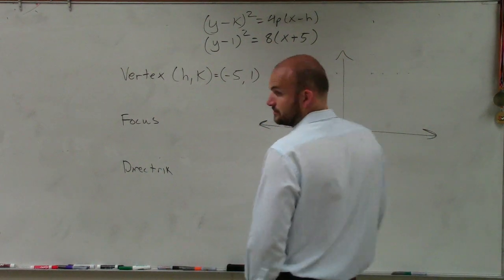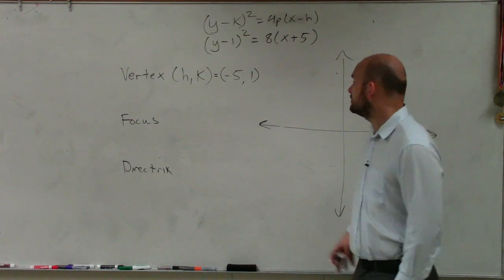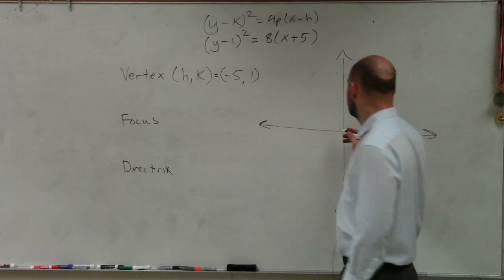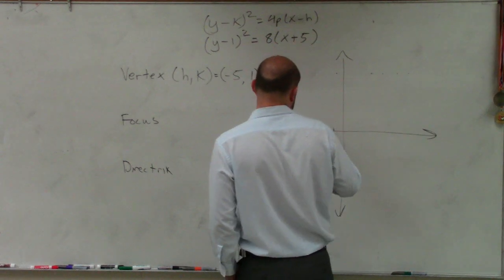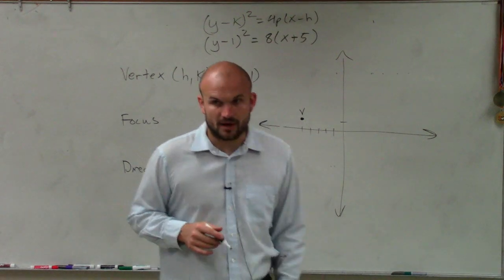The formula, it was the opposite going through. So now I'll go and plot the vertex. So 1, 2, 3, 4, 5, up 1. So that is my vertex.